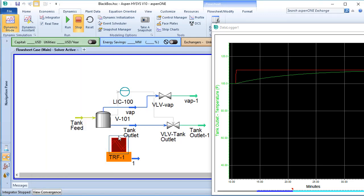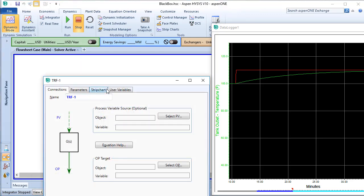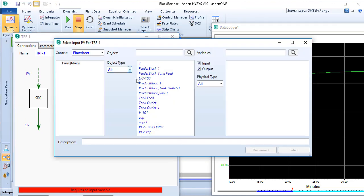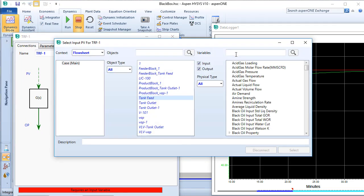Open the Transfer Functions property view and set the process variable source to the feed stream's temperature. Then set the OP target to the newly created stream's temperature.